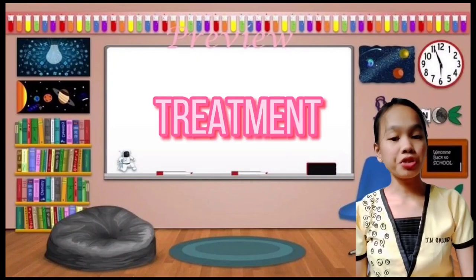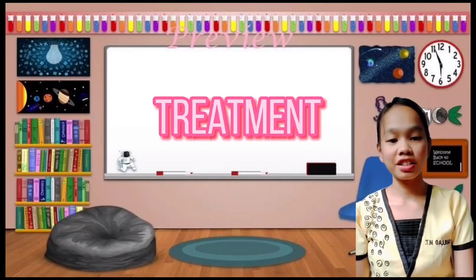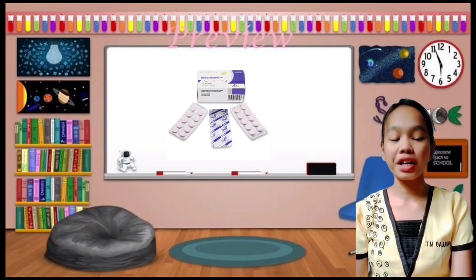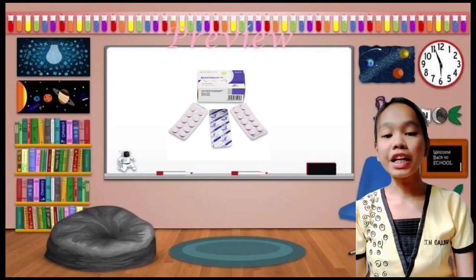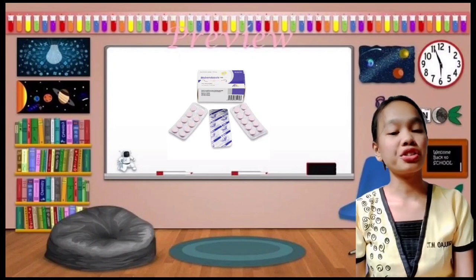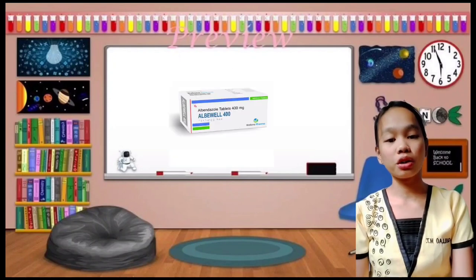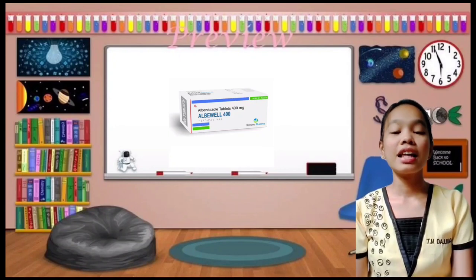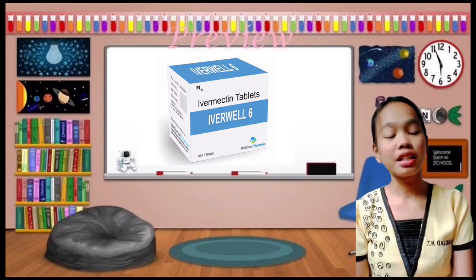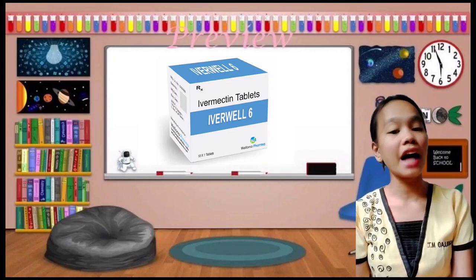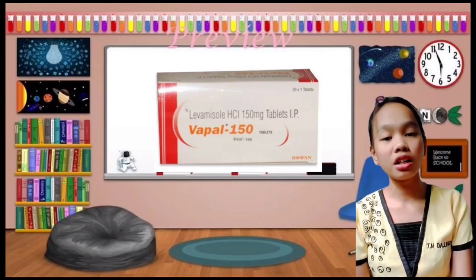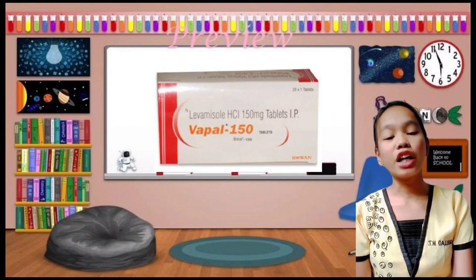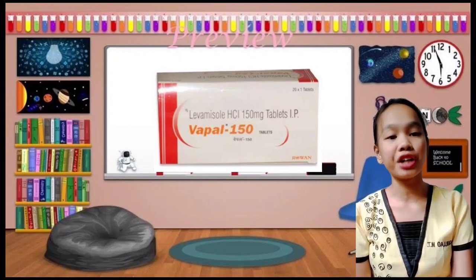Ascaris lumbricoides can be treated through several drugs. Number one is Mebendazole, which is the drug of choice, taken orally 100 mg twice a day for 3 days. Next is Albendazole, given as a single dose of 400 mg. Next is Ivermectin, which causes paralysis in adult worms. Lastly is Levamisole, taken orally 150 mg for adults and 4 mg per kg for children.